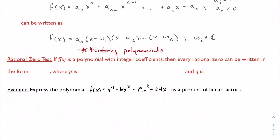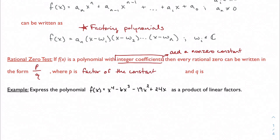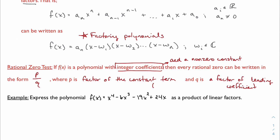One of the things that makes this even easier is the Rational Zero Test. If f(x) is a polynomial with integer coefficients and a non-zero constant term, then every possible rational zero can be written in the form p/q, where p is a factor of the constant term and q is a factor of the leading coefficient — or in generic notation, p is a factor of a₀ and q is a factor of aₙ. We can use this to focus our work and pinpoint where to begin looking for factors instead of blindly plugging in numbers.